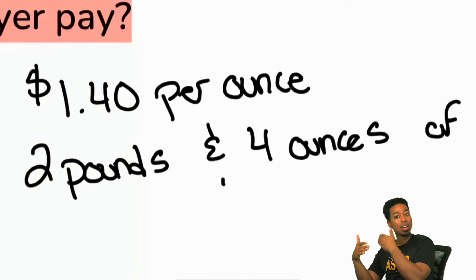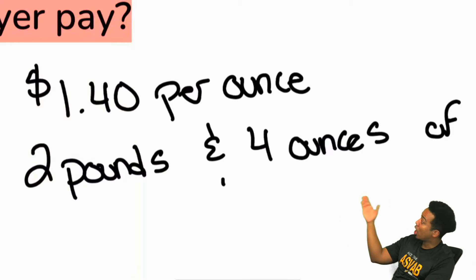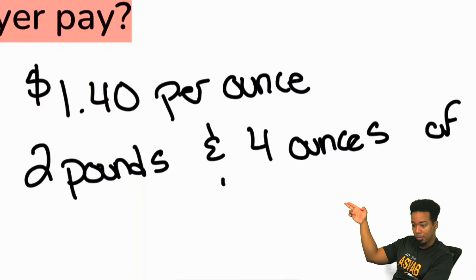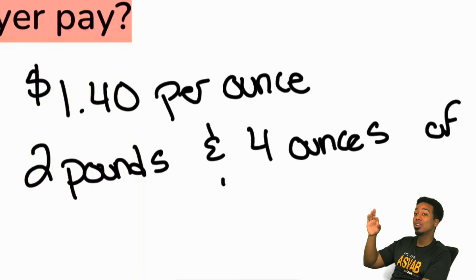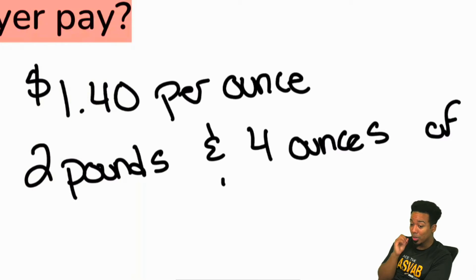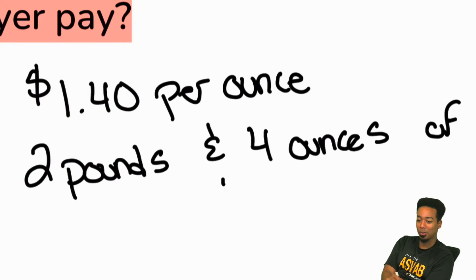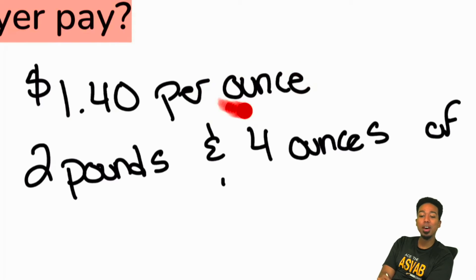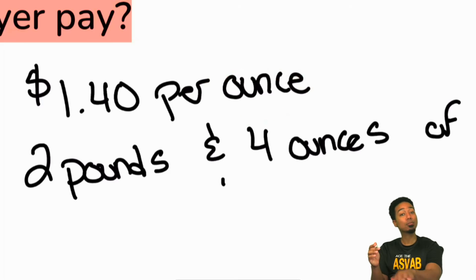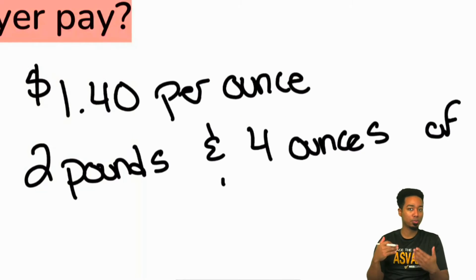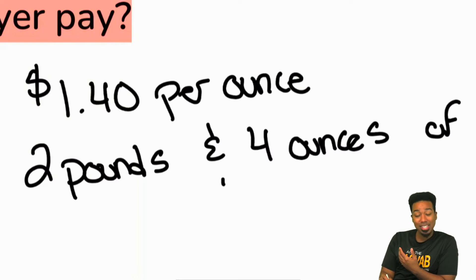In this case we have one dollar and forty cents per ounce, so we need to multiply that one dollar and forty cents times the number of ounces. We can only multiply the one dollar and forty cents by the number of ounces — remind yourself of that.